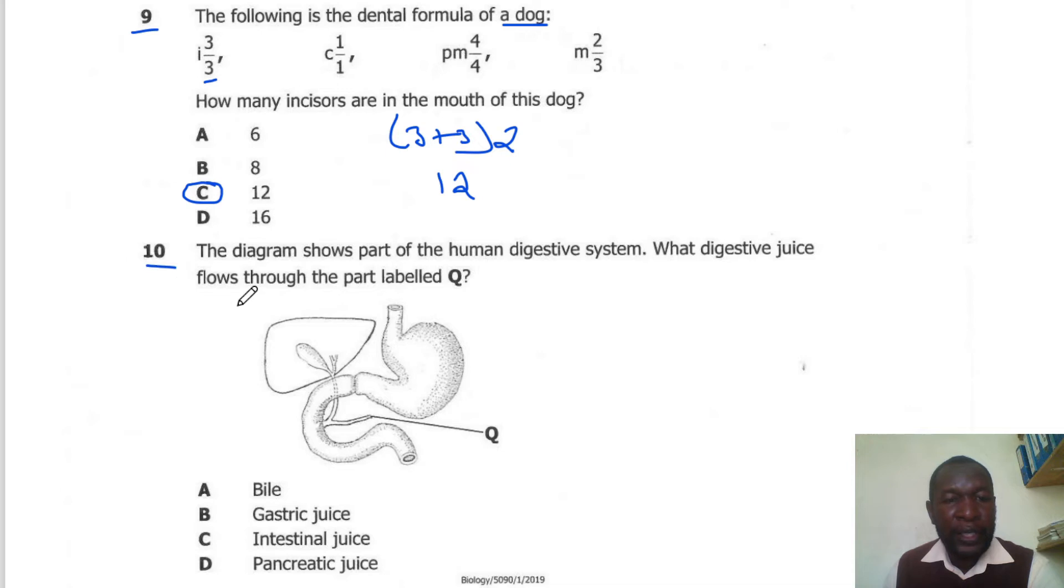Question 10. The diagram shows part of the human digestive system. What digestive juice flows through part Q? Q is the pancreatic duct and the pancreatic duct will carry pancreatic juice. So the correct answer is D.